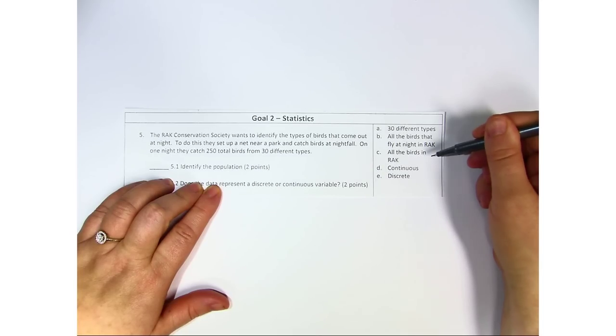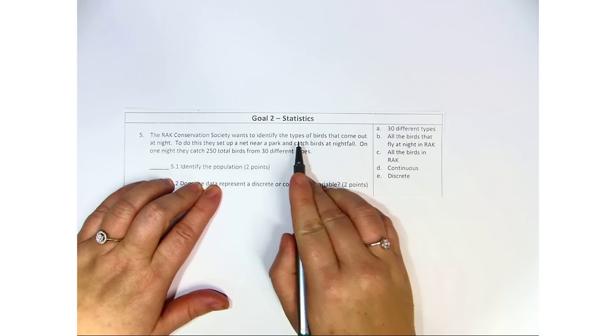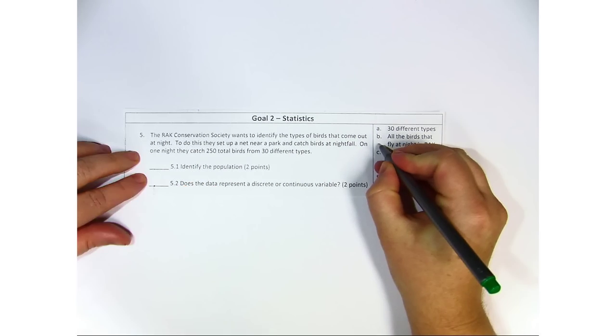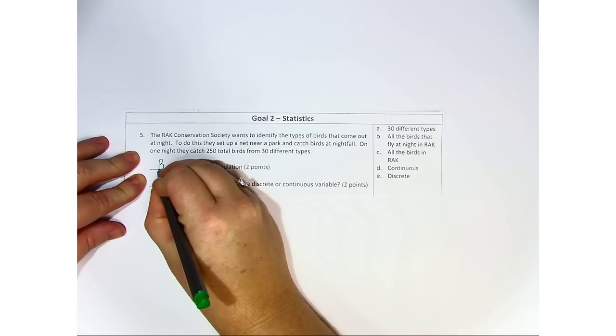Or is it all of the birds in Rack? Well, in this case, we want to identify the type of birds that come out at night. So we're going to be looking at B for our population.